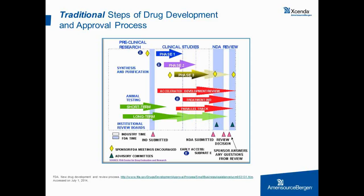In phase two, safety and efficacy trials begin as the drug is administered to the target population. At the end of phase two, the manufacturer meets with FDA officials to discuss the development process, address any concerns, and begin protocols for phase three trials, which are the most extensive and expensive. Once phase three is completed, manufacturers file a new drug application or biologic license application. The review of either application typically lasts up to two years, bringing the total drug development and approval timeline to anywhere from 10 to 12 years.